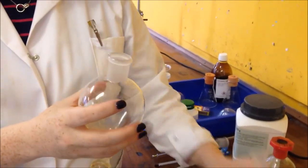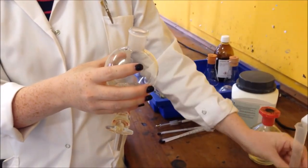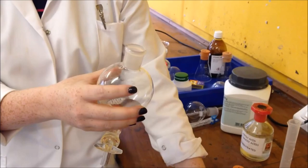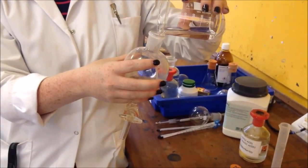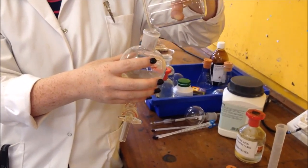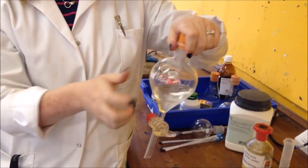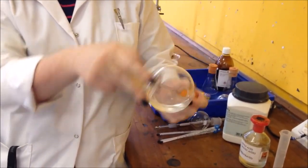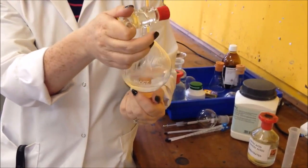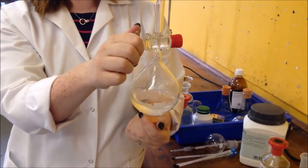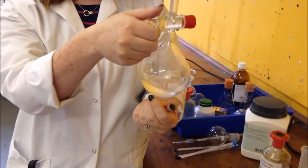I'm going to put the lid back on this. We're going to be inverting it so we need to make sure that it's quite secure. You're going to need to have quite a firm hold on this. Invert it several times to give it a mix and all you need to do is open the tap to release any gas that comes off. I would do this maybe two, three times.